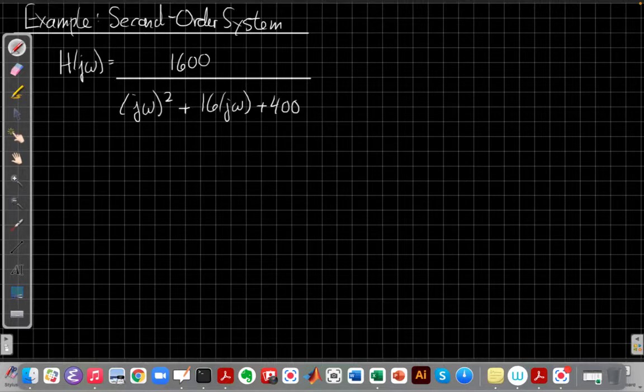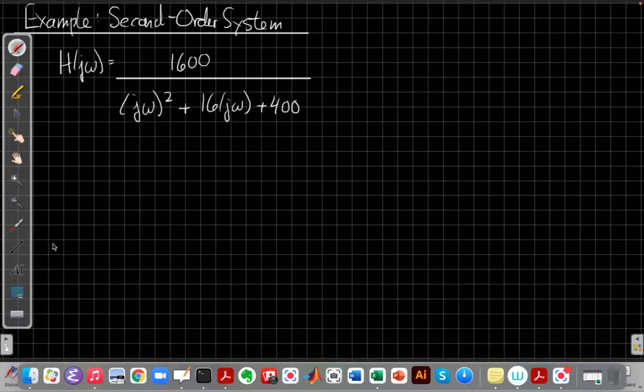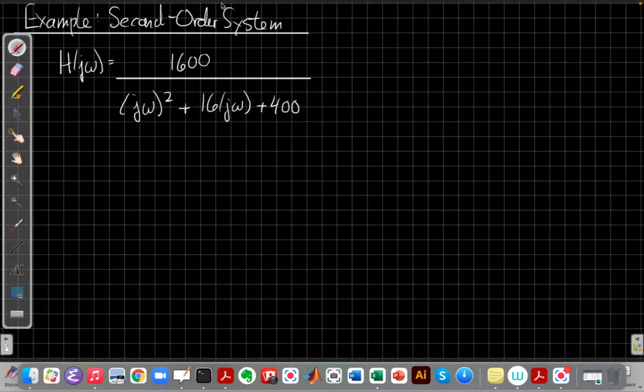And the first thing I always want to do to minimize the risk of getting anything wrong is to move this into standard form, which means I need to solve for what ωn² or ωn and the ζ, the damping parameter, are. So I'm going to write up the standard form denominator right next to this to help us see how to match up terms.